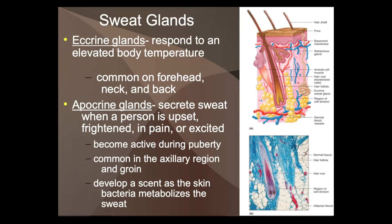You can walk into a room and kind of feel the tension — chemicals are secreted in the room that you can pick up on subconsciously. There probably is a way to communicate with other people through this. Apocrine glands' main purpose is probably for communication, to let people know how you're feeling. Importantly, apocrine glands are not used for cooling down — they're used for other purposes.